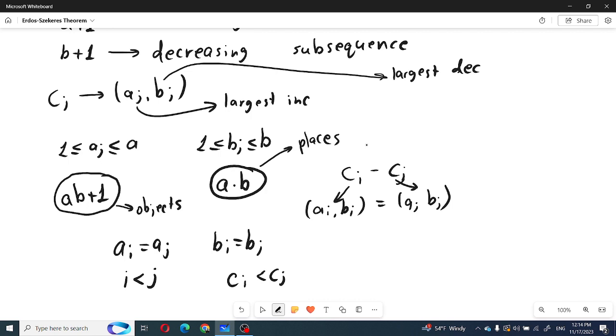now look at the increasing subsequence which ends at point C_i. Its length must be a_i. Now imagine that this is C_i and this was C_j.